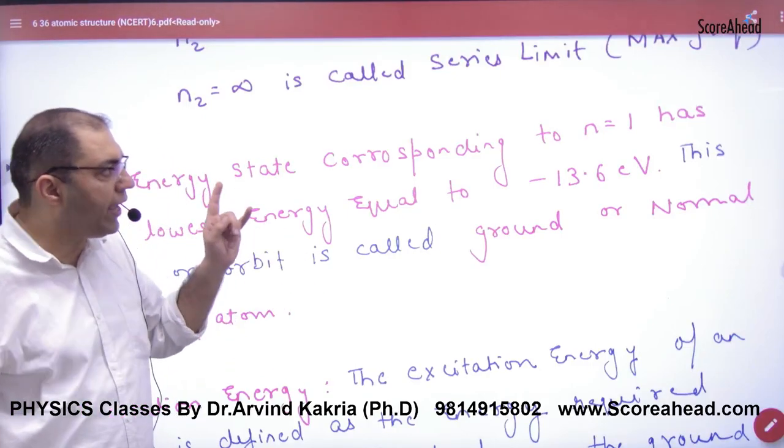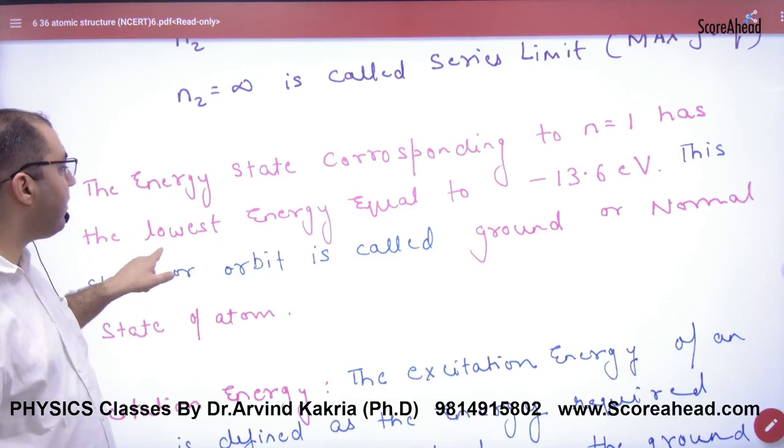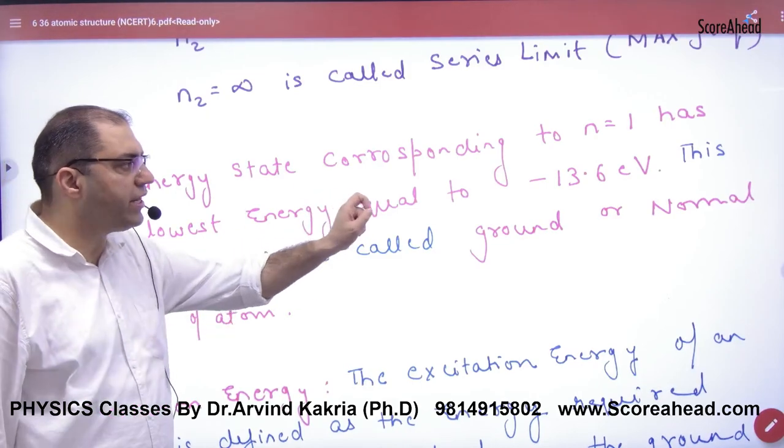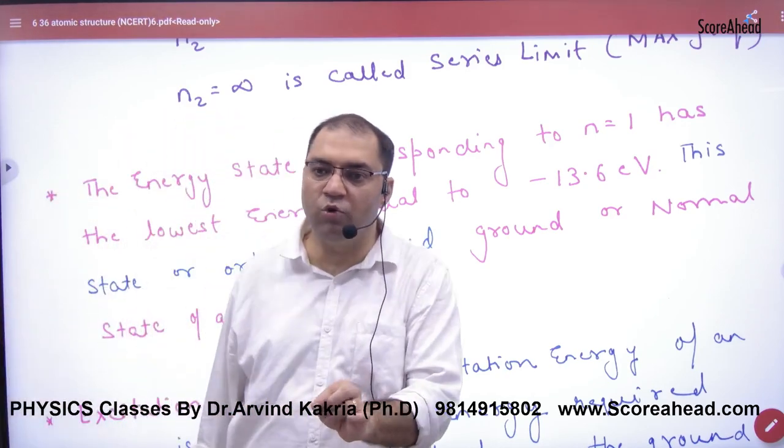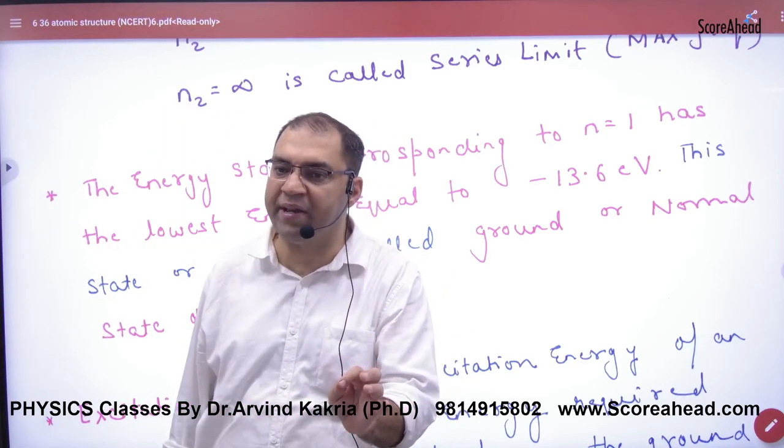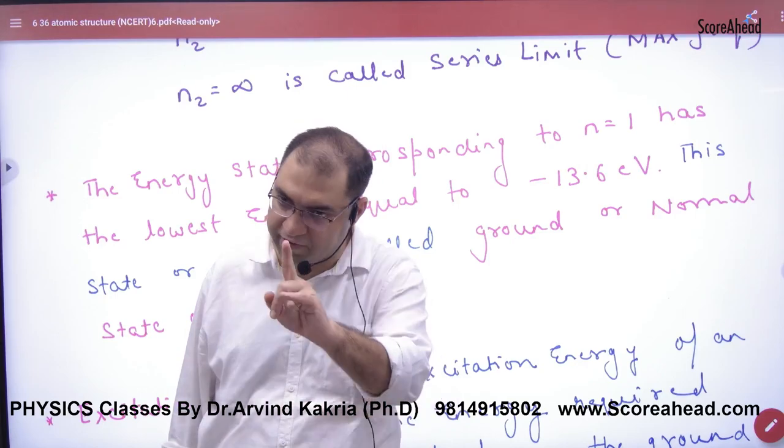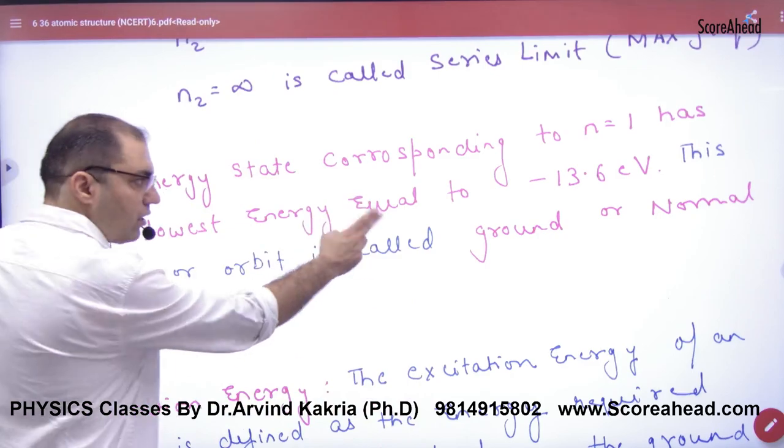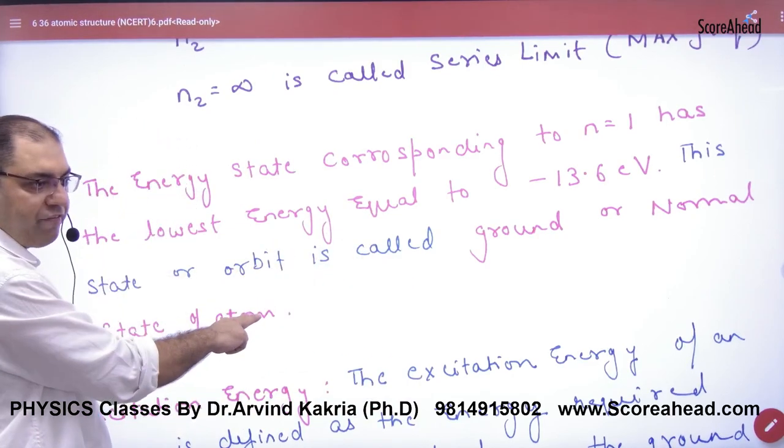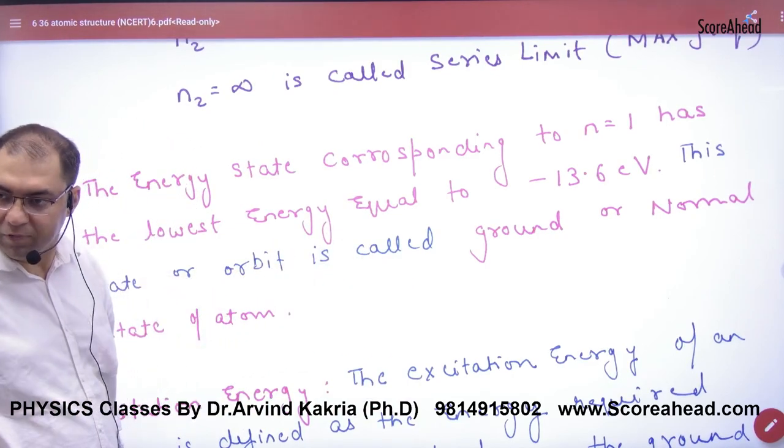The energy state corresponding to n=1 has the lowest energy equal to -13.6 electron volts. In hydrogen's case, when n=1, the energy formula is -13.6 by 1 square. In the first shell, the minimum energy occurs. This minimum energy is called the ground state or normal state of the atom. This term 'ground state' should be remembered.